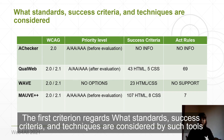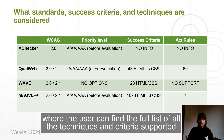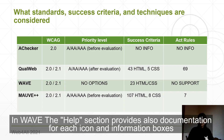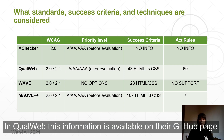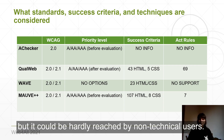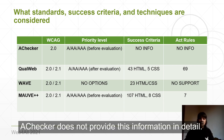The first criterion regards what standards, access criteria, and techniques are considered by such tools. In Mauve++ and Wave, this information is available in the help menu of the tool, where the user can find the full list of all techniques and criteria supported. In Wave, the help section also provides documentation for each icon and information box used to indicate accessibility issues during evaluation. In QualWeb, this information is available on the GitHub page, but it could be hard to reach for non-technical users. A-Checker does not provide this information in detail.